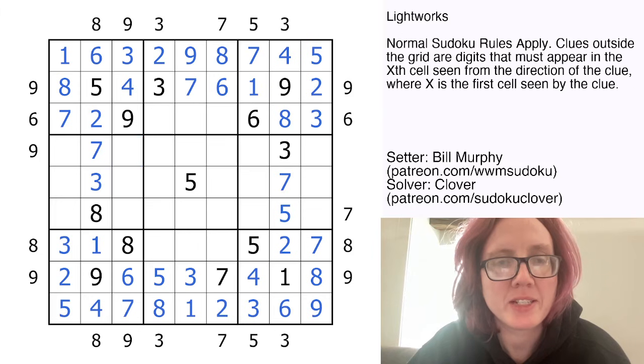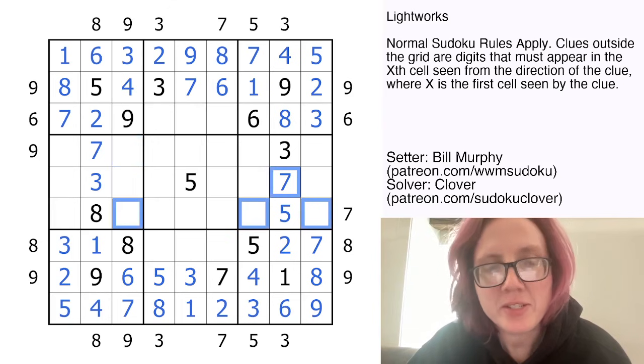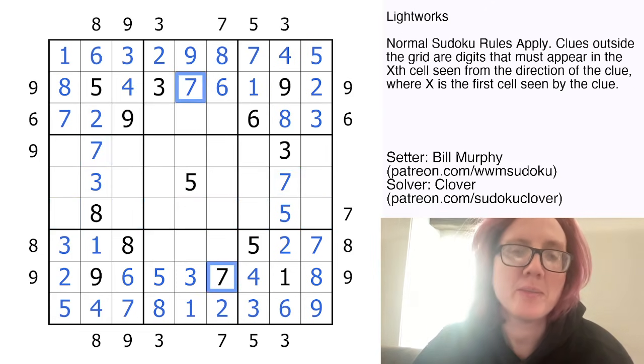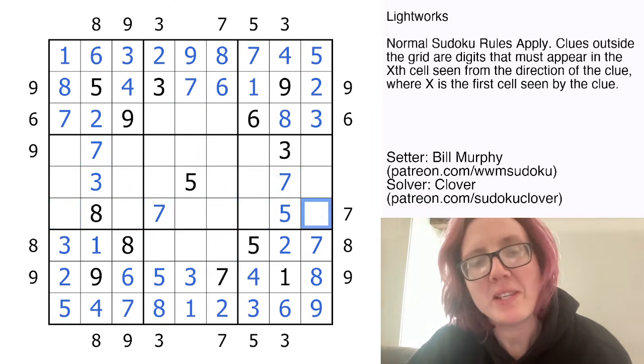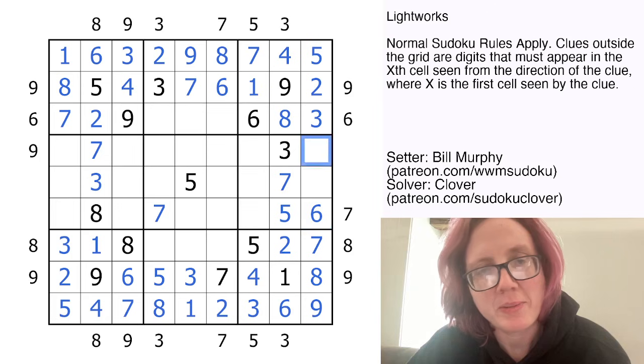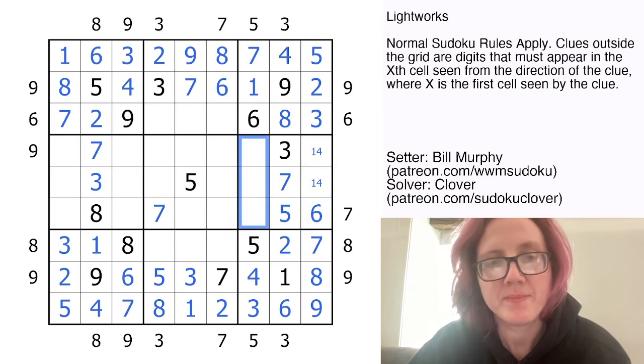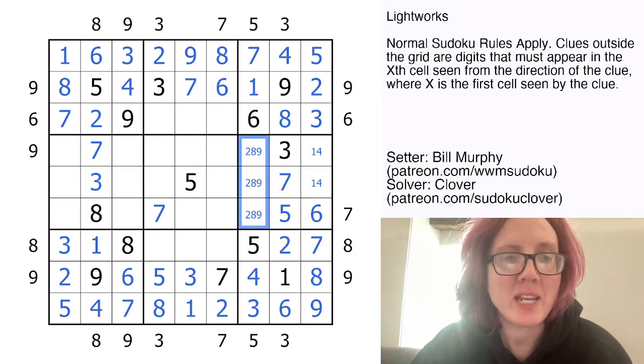So now let's start working on this 9 clue and this 7 clue. So where does 7 go in this row? It can't go in these two cells because of that 7. It can't go in these two cells because of that 7. So it must go in the middle somewhere, but there are already 7s in these two columns, so 7 goes here with a 6 indexing where it appears. And that makes this a 1, 4 pair. And these digits will have to be 2, 8, and 9.